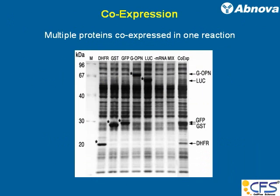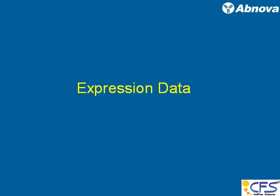Also, in the WeJAM system, expressing multiple proteins together is very easy. All you have to do is produce different messenger RNAs, put them together, and co-express. This is one example, and next I'll show you some expression data.